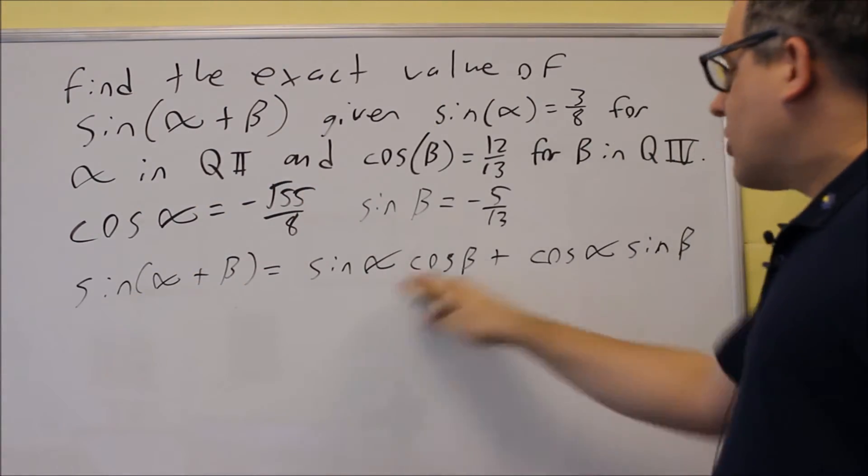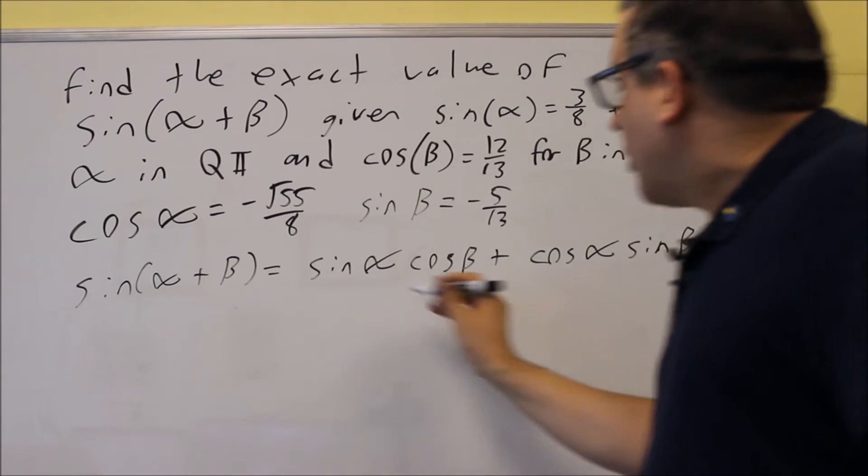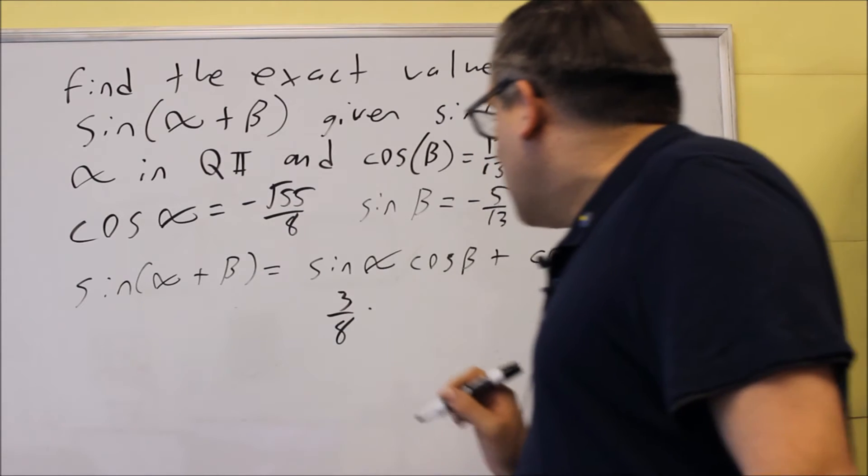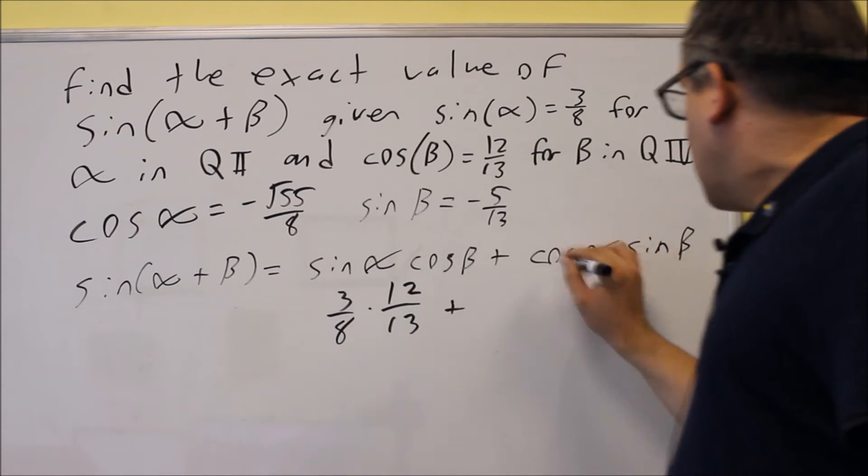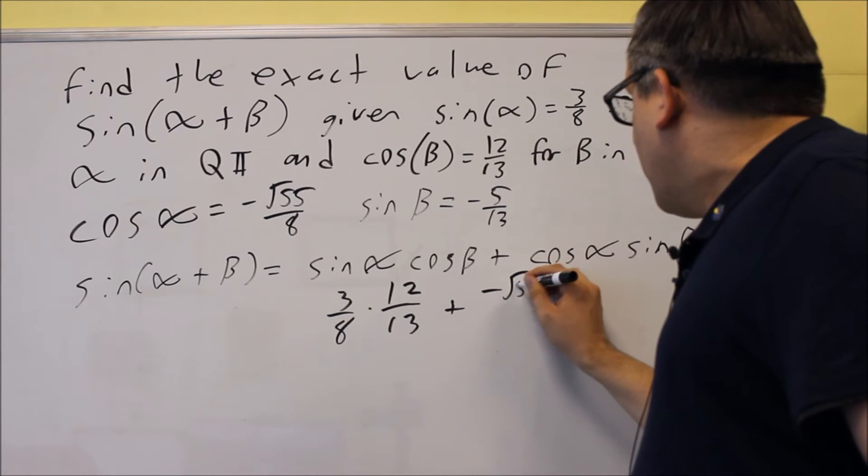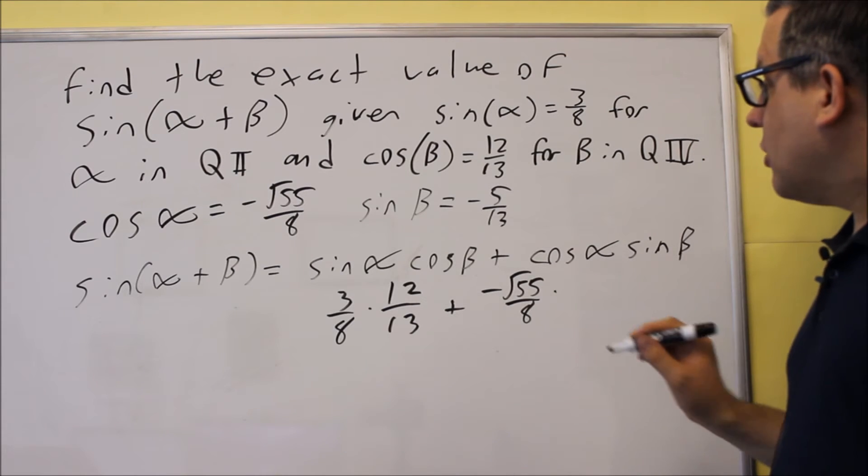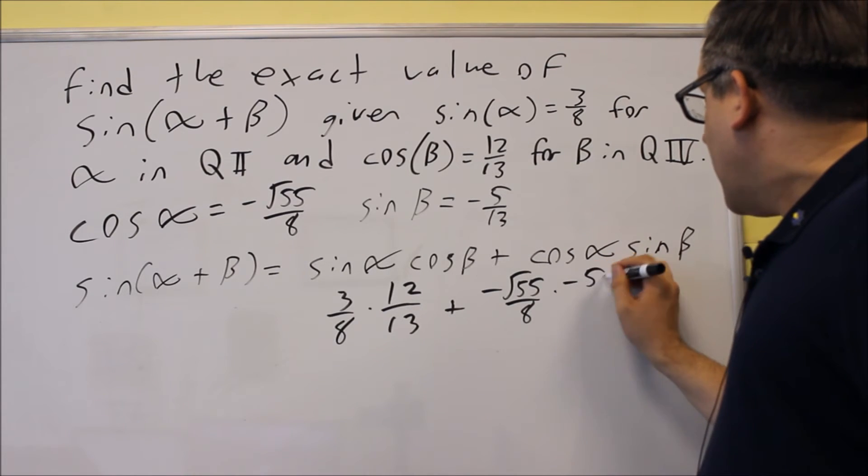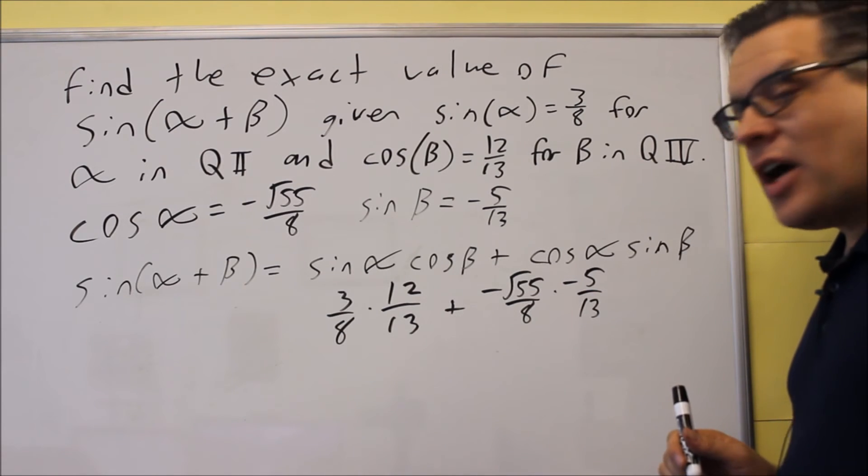Okay, now that's complete. Let's go ahead and fill this out. So sine alpha. Okay, so we just go back. Now we're just going to plug in values for all these. Cosine alpha, that was negative root 55 over 8. And then sine beta was negative 5 thirteenths. So now we're just going to combine this together.